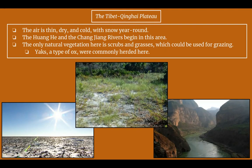The Tibet Qinghai Plateau has air that is thin, dry, and cold with snow year-round. The Huanghe and Changjiang rivers begin in this area. The only natural vegetation you'll find here are scrubs and grasses, which can technically be used for grazing with animals. The one common animal in the region is the yak, a type of ox herded here. And here is the Huanghe flowing from the plateau.